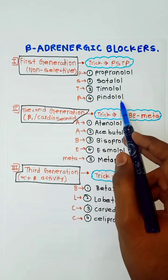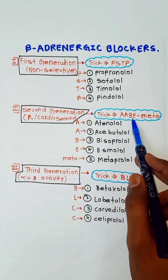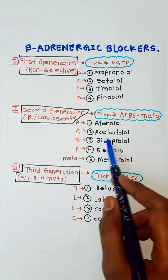In second generation drugs, the trick to remember is ABEMETA: A for atenolol, A for acebutolol, B for bisoprolol, and E for esmolol, and META for metoprolol.